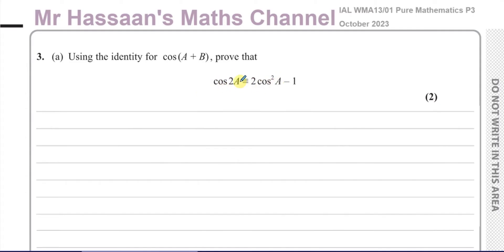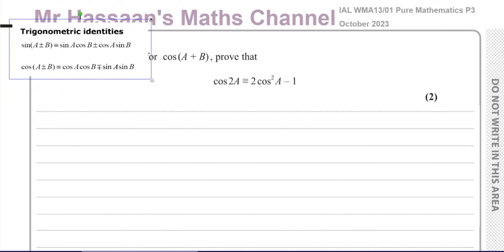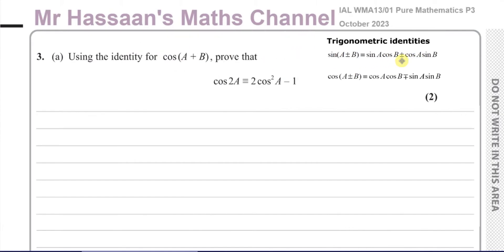Suppose you've mixed up the identity — is it 1 minus 2 cosine squared A, or 2 cosine squared A minus 1? It's a good idea to know how to derive it. So sometimes in these questions I try to show how we derive it. It can be derived from the cosine addition identity, which is on the formula sheet. I've got it prepared here — this is taken from the formula sheet.